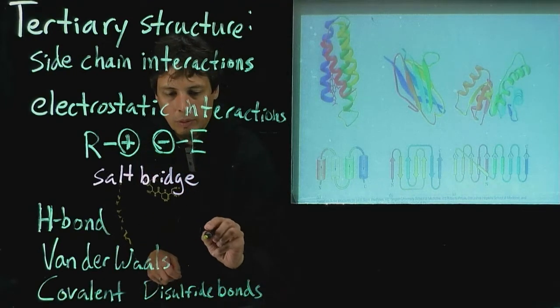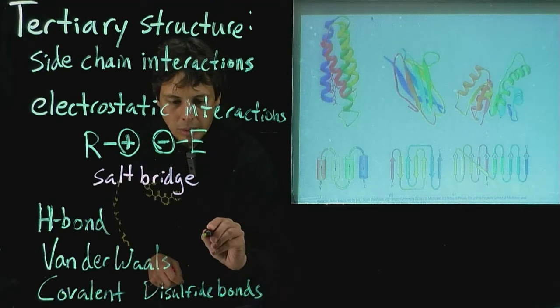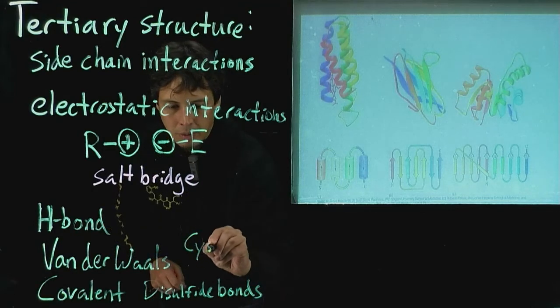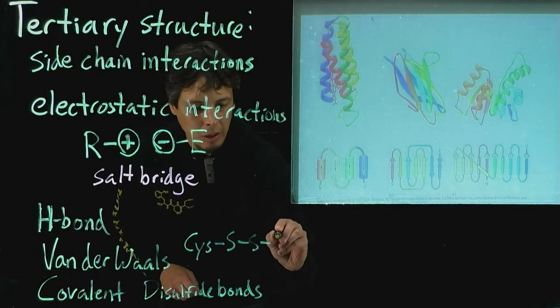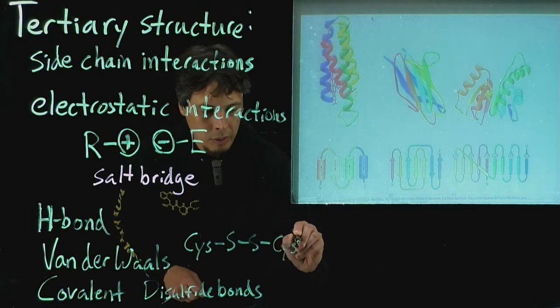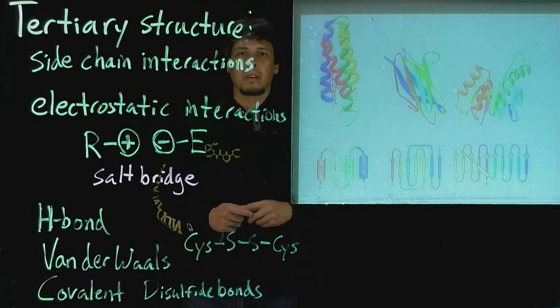Which can occur between two cysteine residues. So cysteine has an SH side chain, and it can form a bond with another cysteine residue through the sulfur. And so that's called the disulfide bond.